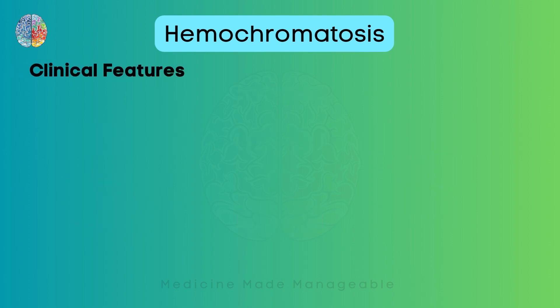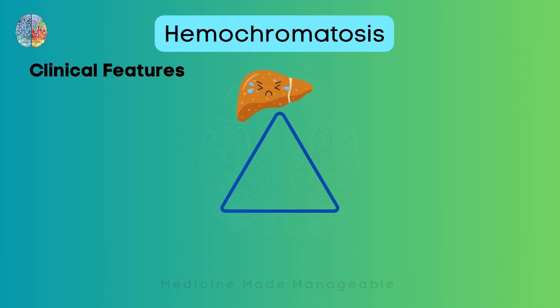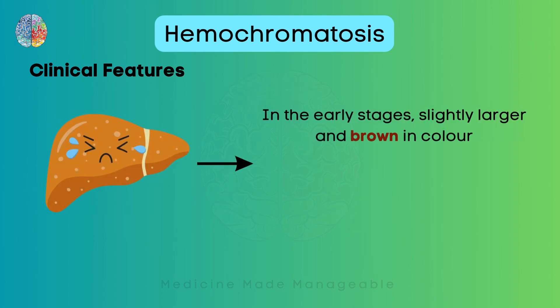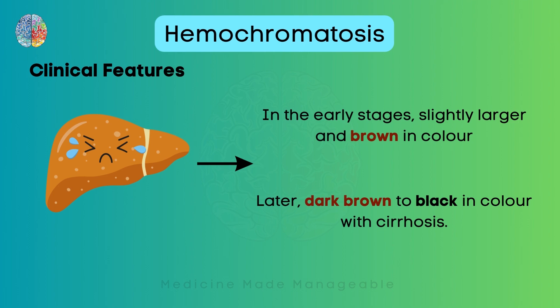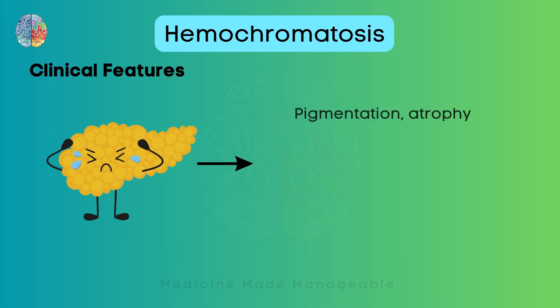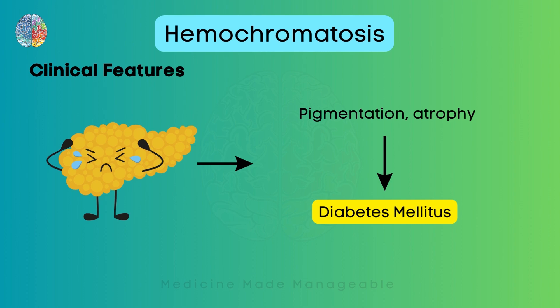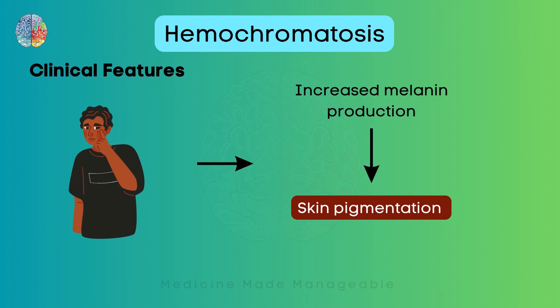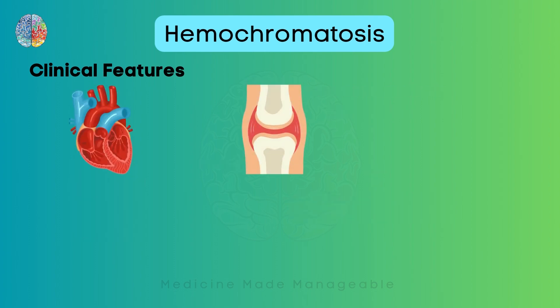Now what are the clinical features seen in a patient suffering from this disease? You will see a triad mostly — the liver, the pancreas, and the skin are affected. In early stages, there will be slight brown colouring of the liver and it will be enlarged. In later stages, the liver will become dark brown and black in colour, and you may also see cirrhosis. In the pancreas, there will be pigmentation and atrophy which will lead to diabetes mellitus — very important to remember. In the skin, there will be increased melanin production leading to skin pigmentation. Other organs affected include the heart, joints, and gonads.